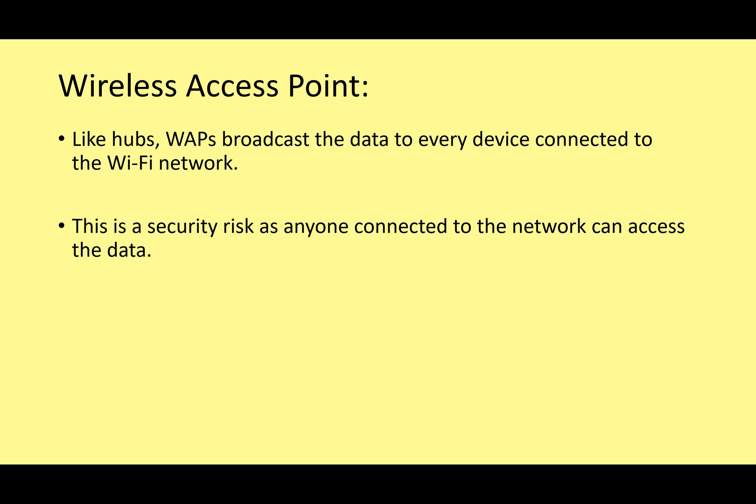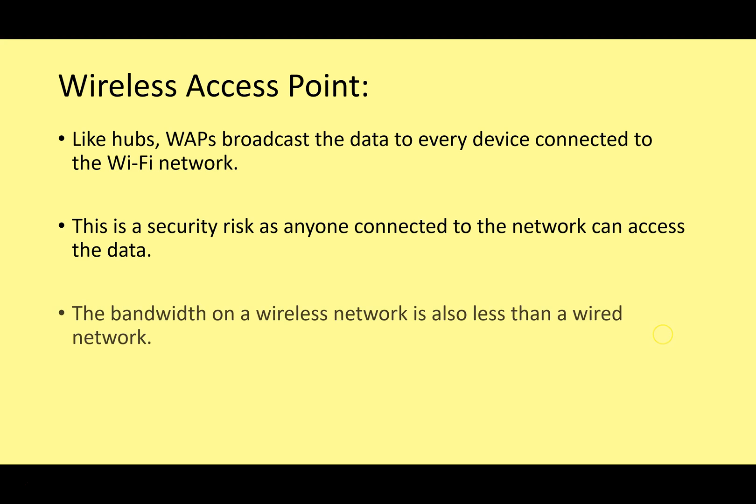The data sent over a WAP can be intercepted by any device connected to the wireless access point, so this is a security risk - that's why we use a lot of encryption and other technology with wireless. The bandwidth of a wireless network is also less than a wired network, which is often why in a computer lab at school or university all computers are wired together. Wireless signals are also more prone to interference and signal degradation than a wired connection.